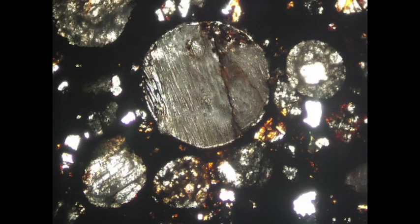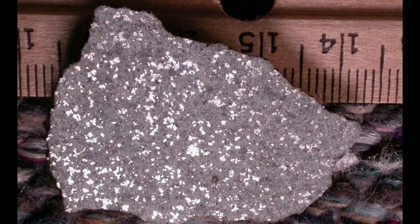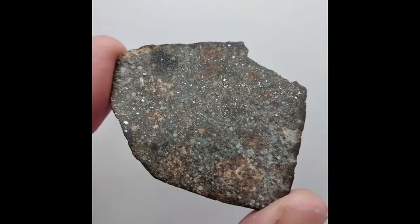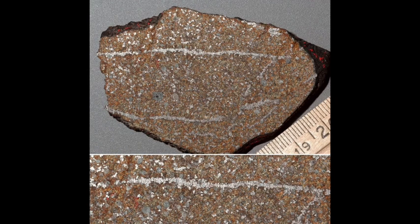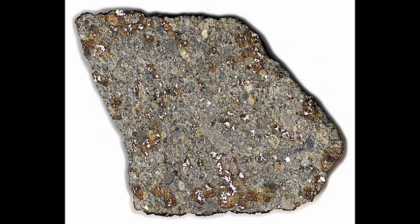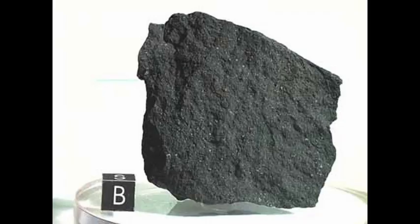Most chondrites also exhibit iron-nickel grains, which become visible when the chondrite is cut or sectioned. The metallic grains found in chondrites are likely the result of the same process that formed the chondrules, with iron and nickel condensing and solidifying into small metallic grains that were then incorporated into the chondritic material. It's worth noting that not all chondrites contain metallic grains.